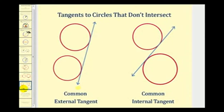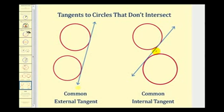Now let's talk about some characteristics when two circles don't intersect. They can still share a common tangent line. On the left, these two circles have a common external tangent line shown in blue, and on the right, these two circles have a common internal tangent line. Notice how for the external tangent the line does not cross between the two circles, but for the internal tangent line, it does.